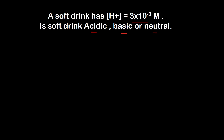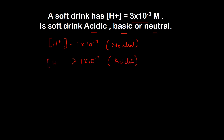Jaisa ki hum jantay hain ki jab kabhi humare paas hydrogen ion ki concentration equal hoti hai 1×10⁻⁷ ki, toh hum jantay hain ki yeh solution neutral solution kehlata hai. Aur jab kabhi hydrogen ion ki concentration greater than 1×10⁻⁷ hoti hai, toh is case mein yeh solution acidic solution kehlata hai. Aur jab hydrogen ion ki concentration 1×10⁻⁷ se kam hoti hai, toh yeh solution basic solution kehlata hai.